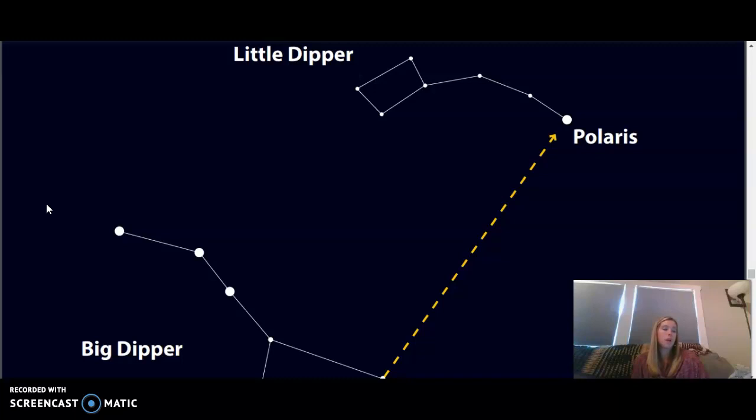The Big Dipper is a group of stars that is part of the constellation Ursa Major, which means Greater Bear in Latin. The Little Dipper is a smaller group of stars that is part of the constellation Ursa Minor.